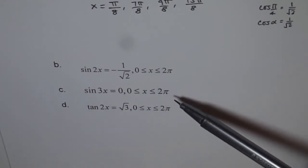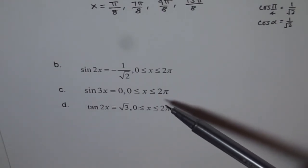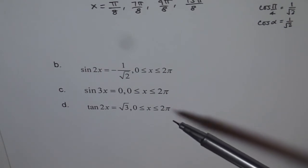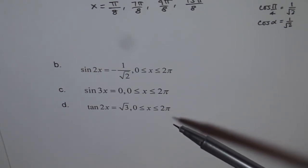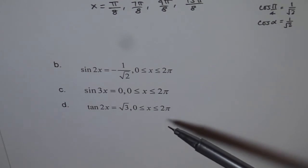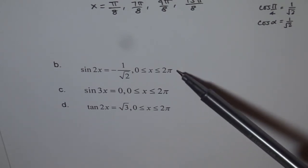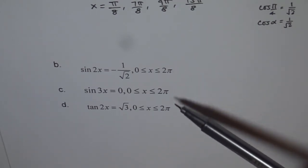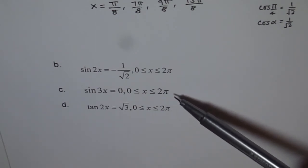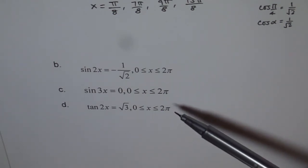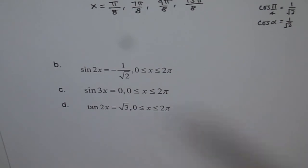And that is sine 2x equals minus square root 2, where x is between 0 to 2π, and then we have sine 3x equals 0, where x is between 0 to 2π, and tan 2x equals square root 3, where x is between 0 to 2π. Well, these two, you can get exact answers, correct? And this one, you need to round. But write both possible answers and when you are rounding, round to the nearest hundredth. Thank you and all the best.